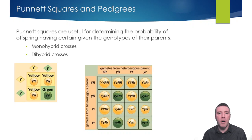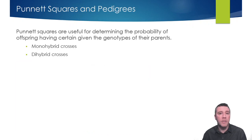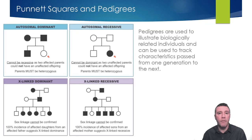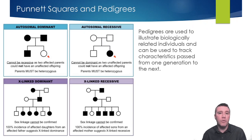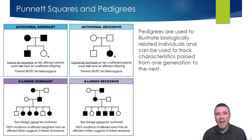A second type of modeling diagram, pedigrees, are essentially family trees that are useful in tracking the inheritance of a particular trait within a family. Whether a trait is the result of a dominant allele or a recessive one, or if the gene is located on an autosome or a sex chromosome, will yield particular patterns in the pedigree. Feel free to pause the video here if you'd like the opportunity to view this diagram a bit longer.